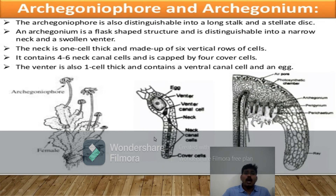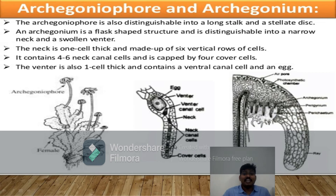Next is the archegoniophore — the female reproductive structure. The archegoniophore is distinguishable into a long stalk and a stellate disc. The archegonium is a flask-shaped structure distinguishable into a narrow neck and a swollen venter. In the venter we can find an egg cell and a ventral canal cell. In the neck we can find four to six neck canal cells, capped by four cover cells.